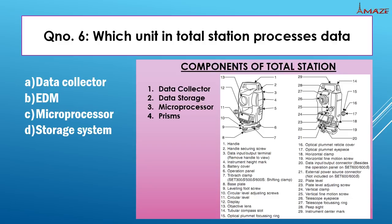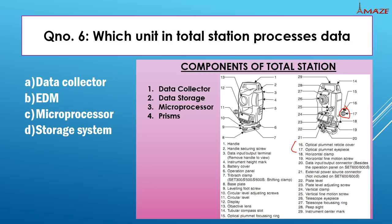Sixth question: Which unit in a Total Station processes data? The components of Total Station include a data collector, data store, and micro-processing unit for data processing. There are also prisms as reflecting surfaces. For precise centering of the instrument, an optical plummet is used. Optical plummet ensures the instrument is accurate and centered.